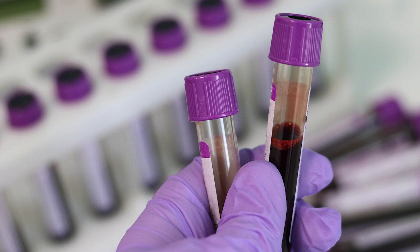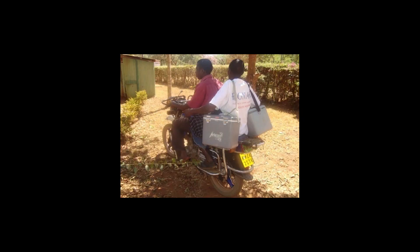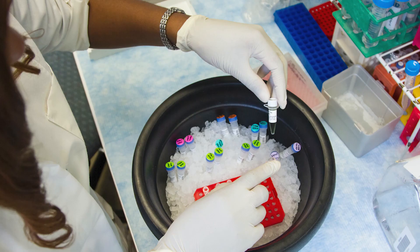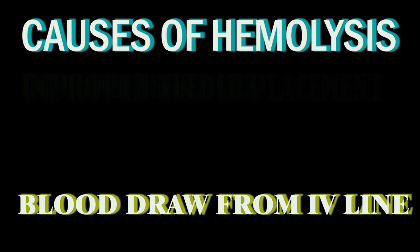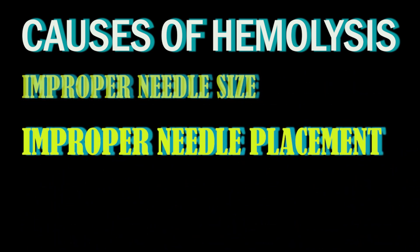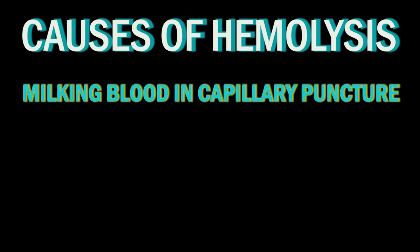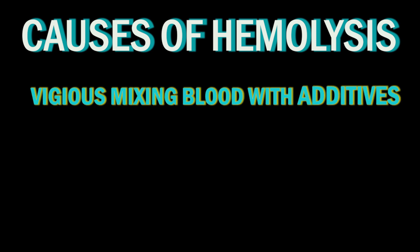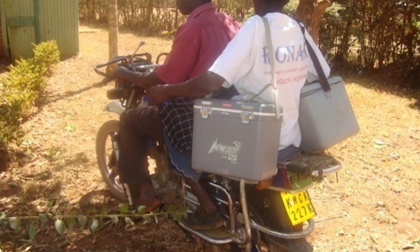What causes hemolysis of a sample? Hemolysis occurs during blood collection, transport, storage, and during centrifugation in the lab. As the RBCs are very fragile, we have to take care during collection, transport, and centrifugation. Common causes of hemolysis include: drawing blood through vascular access devices, prolonged tourniquet application, improper needle placement, improper needle size, excessive pulling pressure on the plunger of a syringe, and milking the site of a capillary puncture.